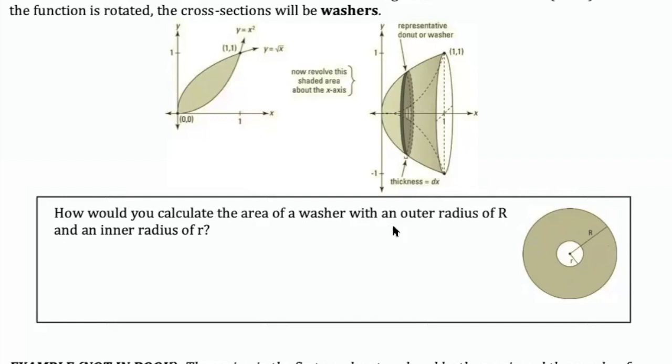How would you calculate the area of a washer with an outer radius of capital R and an inner radius of little r? Well, I know what the area of the outer circle would certainly be. I could do the area of the outer circle, which would be pi r squared, and that's capital R squared.